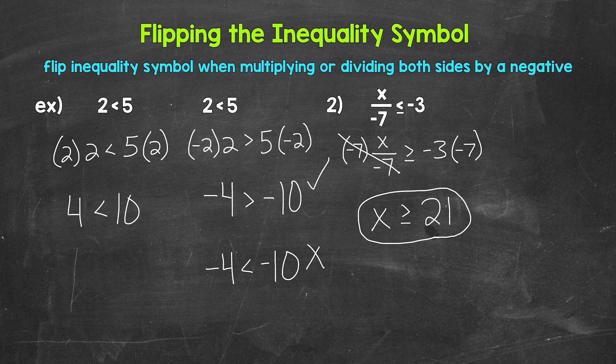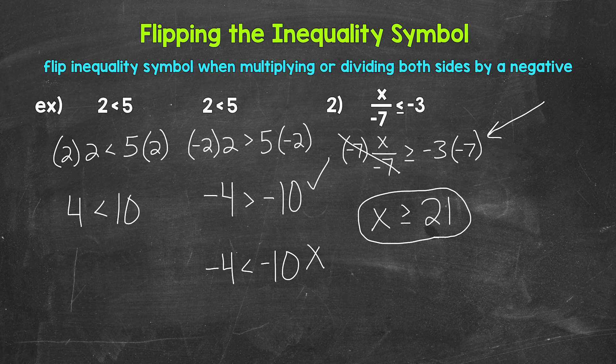When we solved this before, we didn't rewrite everything — we multiplied both sides from the original problem, flipped after multiplying, and ended up with the correct answer. But here I wanted to show that technically the symbol flips as soon as both sides are multiplied or divided by a negative. Now if you forget to flip the inequality symbol, when you go to check a solution, you'll notice that it won't work. So it's important to check and you can catch that mistake. Just remember: flip the inequality symbol when multiplying or dividing both sides by a negative.